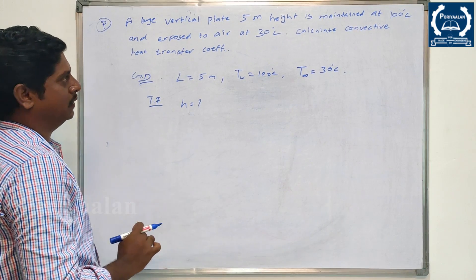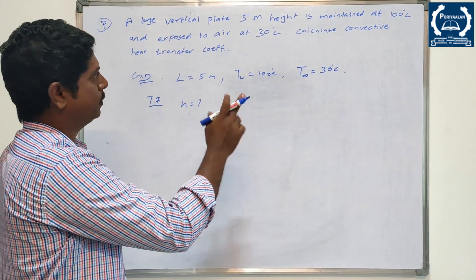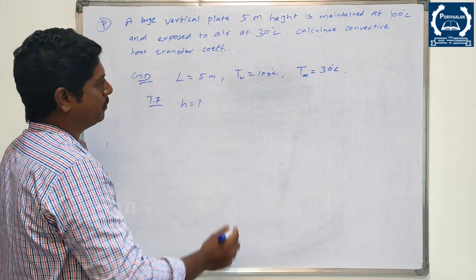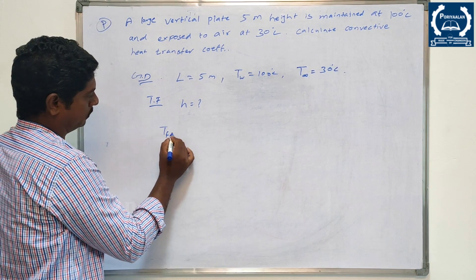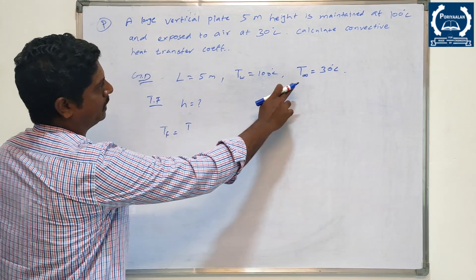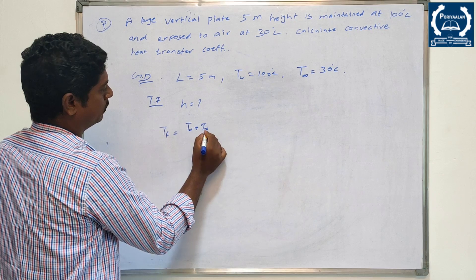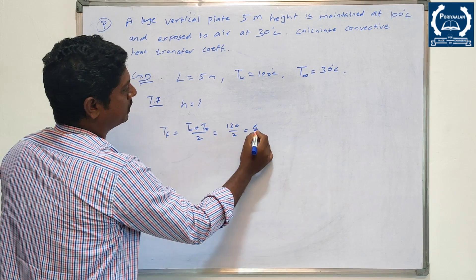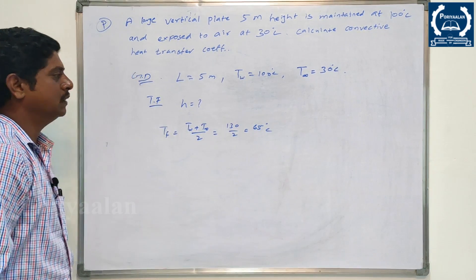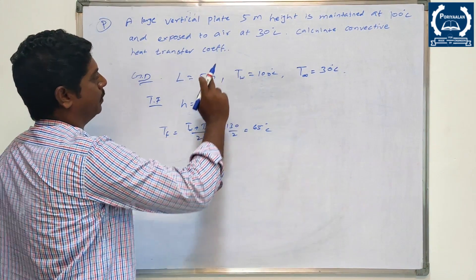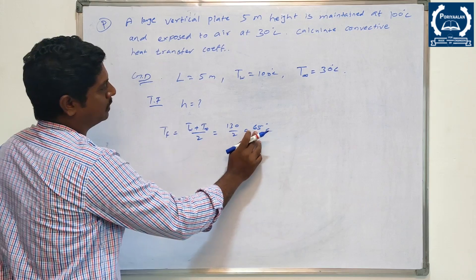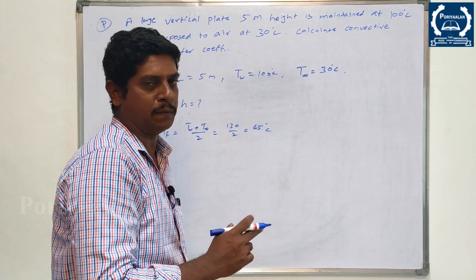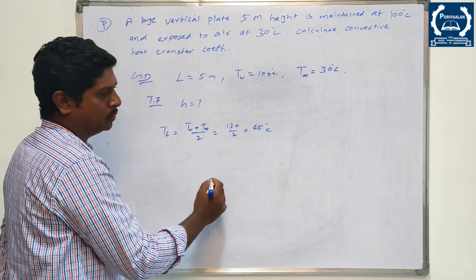For a free convection problem, we use the film temperature Tf. Tf equals (Tw + T∞) divided by 2, which is (100 + 30) divided by 2, giving 65 degrees Celsius. We use properties at approximately 60 degrees Celsius from the data book.